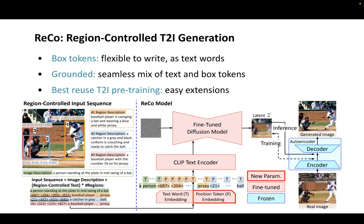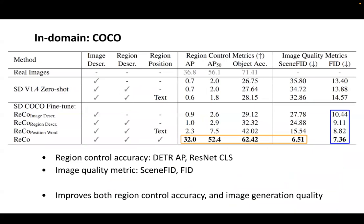For example, when fine-tuned based on stable diffusion on COCO, we fine-tuned the text encoder and the UNet with the added box position token embeddings. The model reused the T2I model generation capability and is extended to understand box token input to provide region controllability. We compare RECO with design baselines using metrics of both region control accuracy and image generation quality. As shown in the orange box, RECO significantly improves region controllability compared with baseline stable diffusion as well as other carefully designed comparisons. For image generation evaluation, the conditional FID is significantly improved, partially due to the good region controllability.